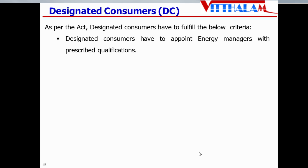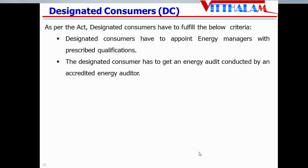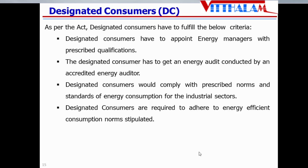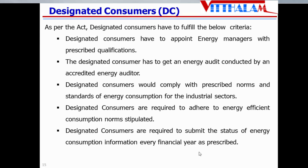As per the act, designated consumers have to fulfill the below criteria: first, they have to appoint energy managers having prescribed qualifications — that is, clearing paper 1, 2, 3 and getting the certificate through BEE. Designated consumers have to get an energy audit conducted by an accredited energy auditor every three years, and comply with prescribed norms and standards of energy consumption for the industrial sectors. They are required to adhere to energy-efficient consumption norms and submit the status of energy consumption information every financial year in the formats given by the designated agency.